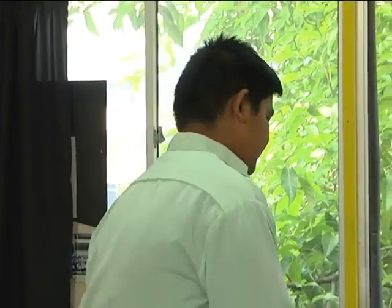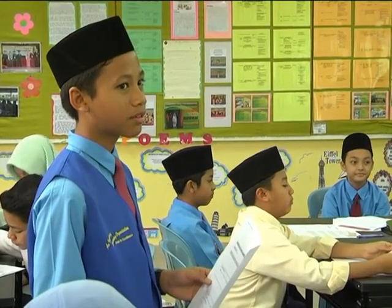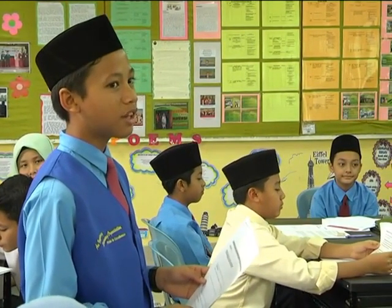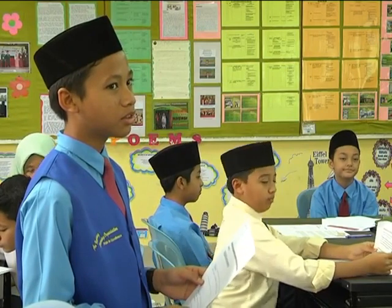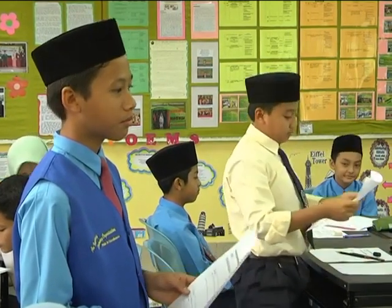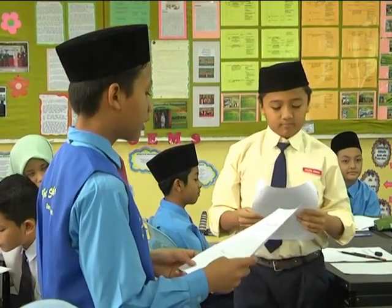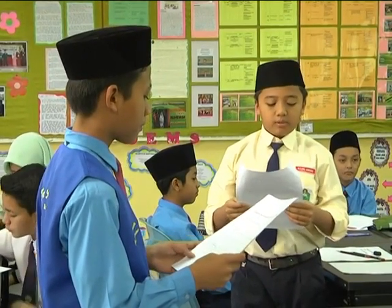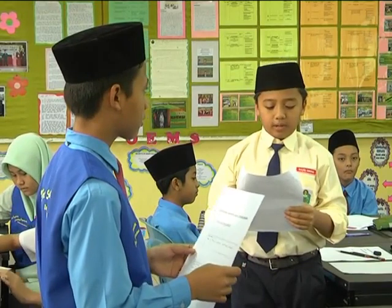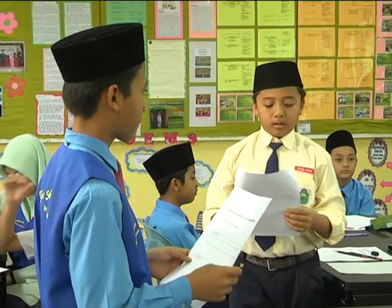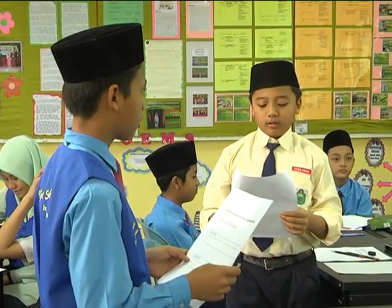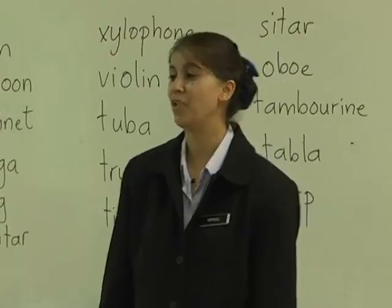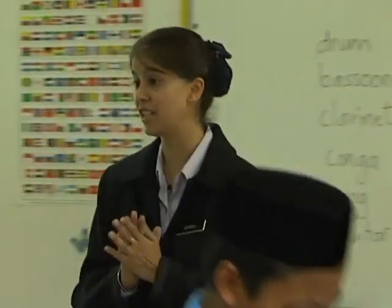Very good. Can we move on to your next question, Muzadik? Who would you like to pose it to? I would like to pose my second question to Razik Aiman from group two. Okay, Razik Aiman, can you please stand up and look at your friend Muzadik? Can you name some of the instruments in the brass family? Some of the instruments in the brass family are the trumpet, trombone, French horn, and tuba. Very good. Now give yourselves a big clap — you have done a good job.